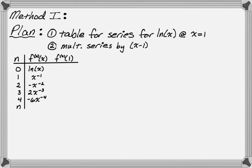Now we look for a pattern. The zeroth derivative doesn't fit any pattern, but that's fine. For the first or greater derivative, it alternates positive, negative, positive, negative. When n is odd, the derivative is positive, so I'll use negative one to the n plus one — giving positive when n is 1 or 3, negative when n is 2 or 4. The coefficients in front of x are 1, 1, 2, 6 — that's (n minus 1) factorial. There's also an x to the negative n factor.